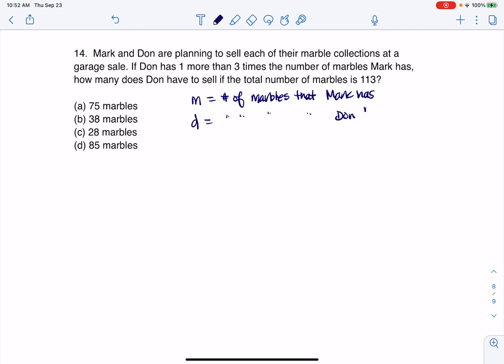So let's see what we've got. Don has one more than three times the number of marbles Mark has. So more implies addition, times implies multiplication. So one of my equations is D equals one plus three M. And then the other thing I hear is that the total number of marbles that they have between them is 113. So whatever Mark has and whatever Don has, when we add them, that's going to be 113.